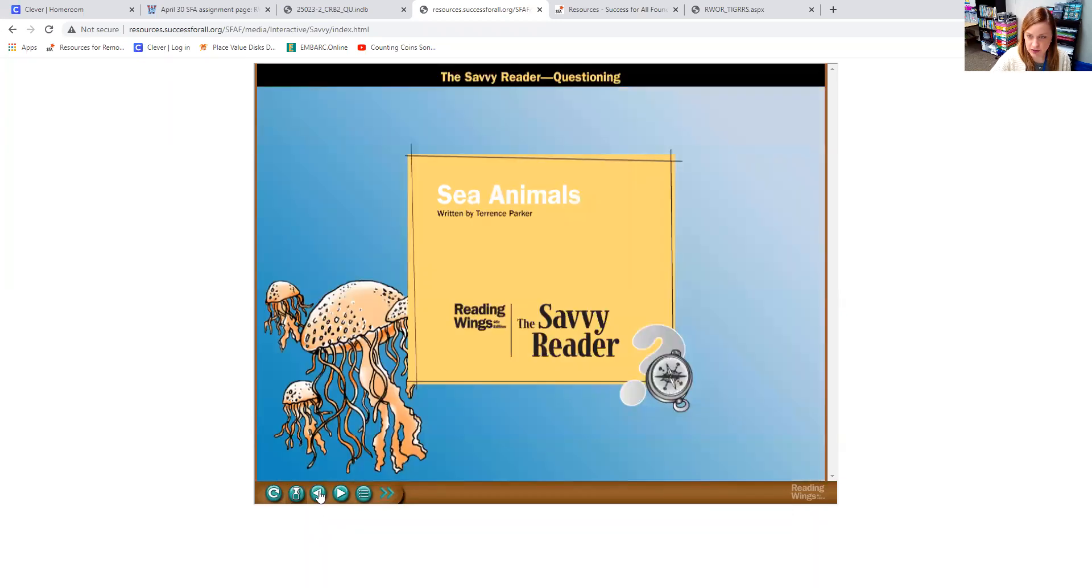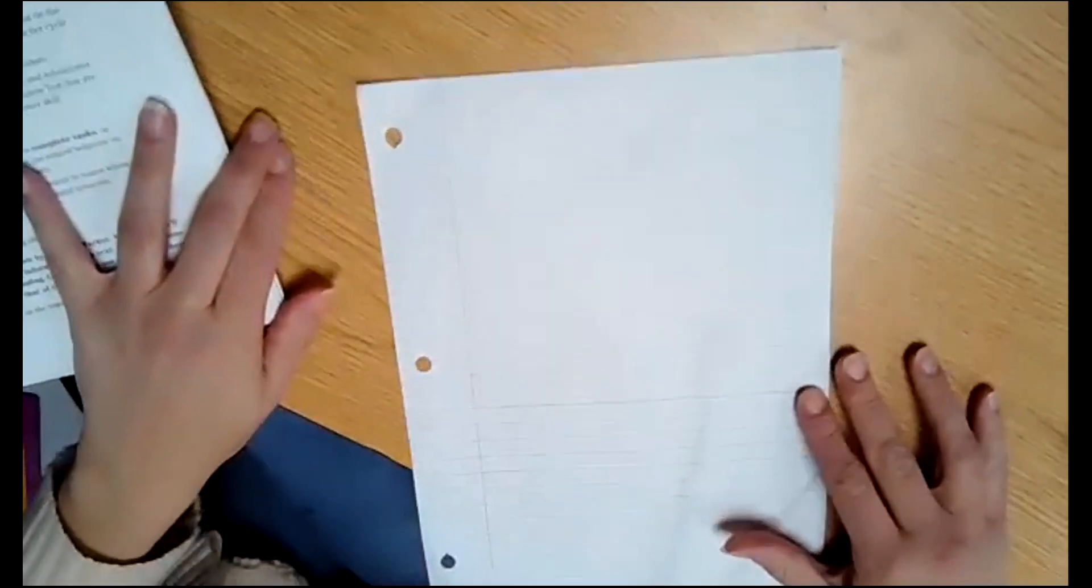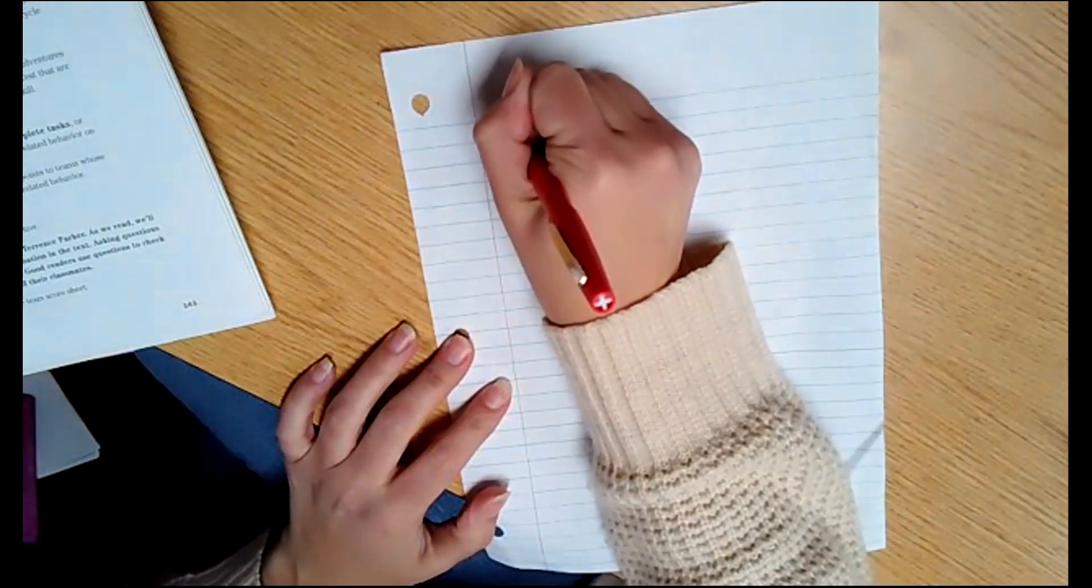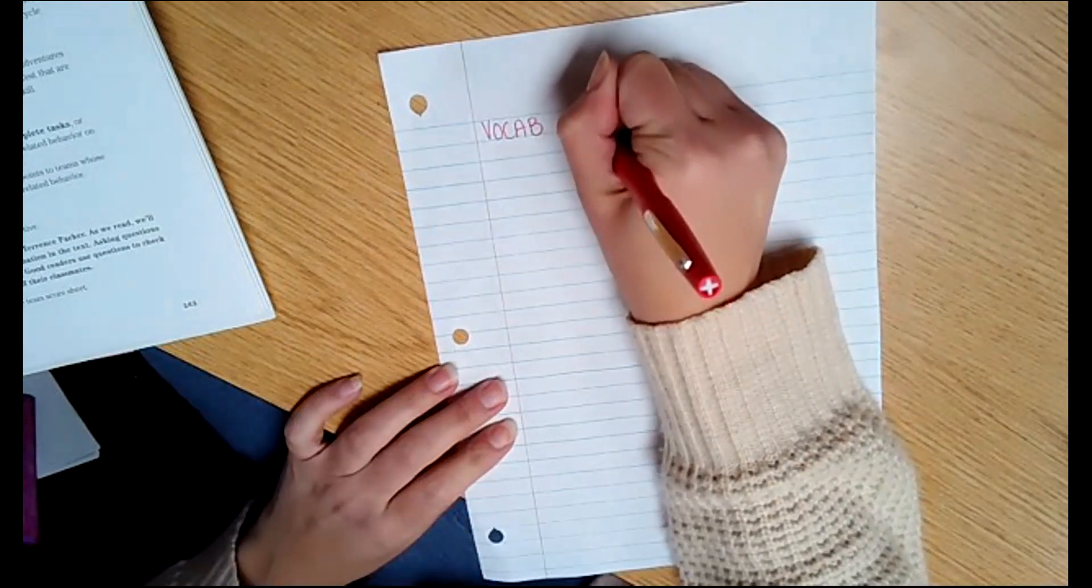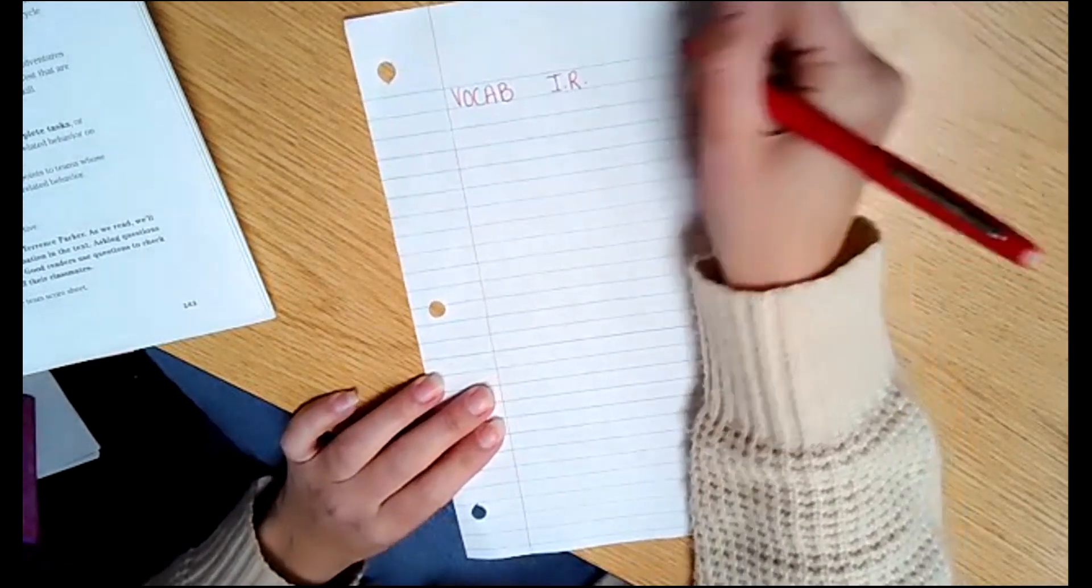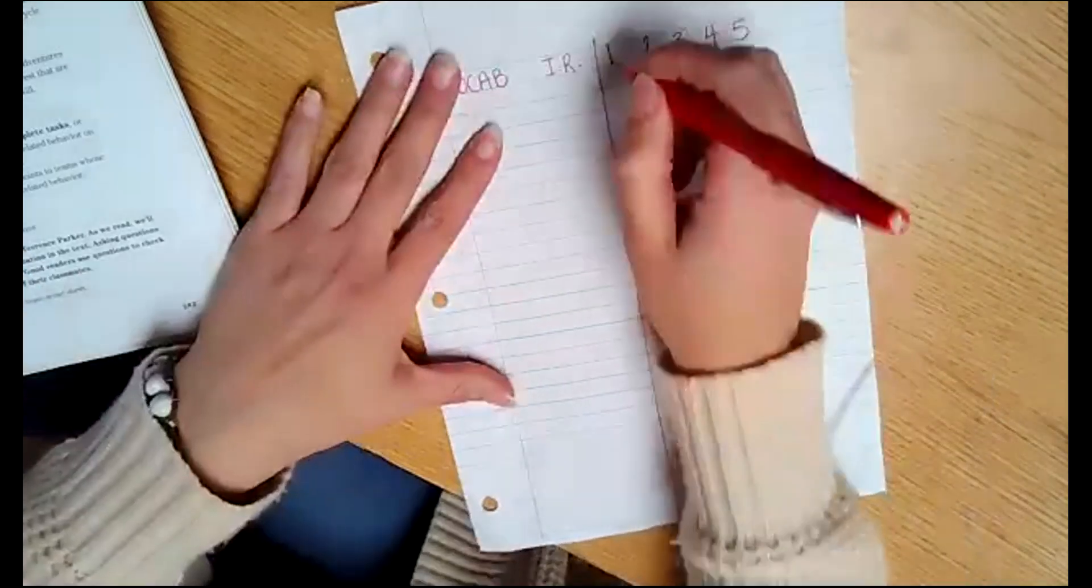So we're going to go through and we're going to rate some new vocabulary words so you're going to put a plus if you know it and a question mark if you're not sure. So we're going to set up our vocabulary right now. We're going to write vocab. That's where we're going to write our word. We're going to put and I are to do our first rating and then you can 12345. So then we're just going to go through and draw those lines down.